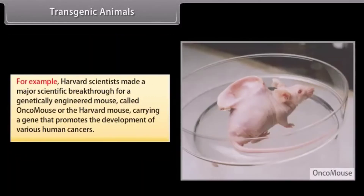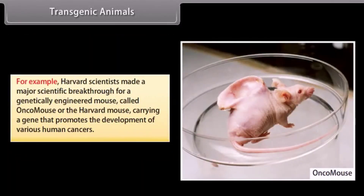For example, Harvard scientists made a major scientific breakthrough with a genetically engineered mouse called the Oncomouse, or the Harvard mouse, carrying a gene that promotes the development of various human cancers.